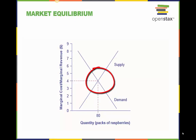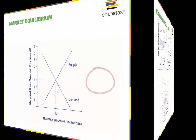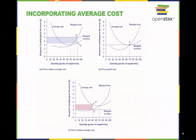The profit maximizing point can be found where the marginal revenue line and the marginal cost curve intersect. The profit maximizing point relates back to the market supply and demand as the equilibrium. When we incorporate average cost into our analysis, we clarify where the firm is actually making a profit, breaking even, or experiencing a loss.